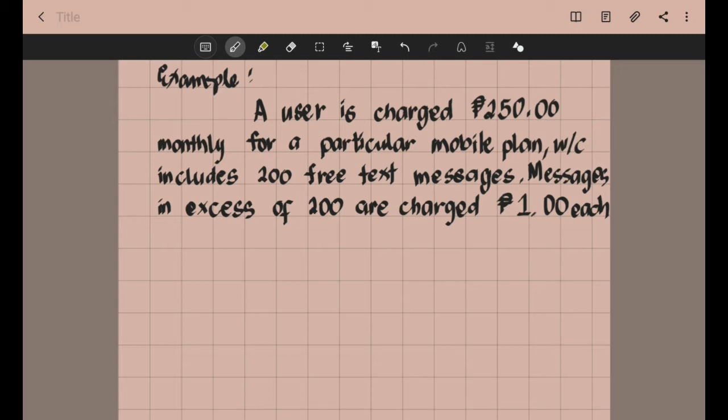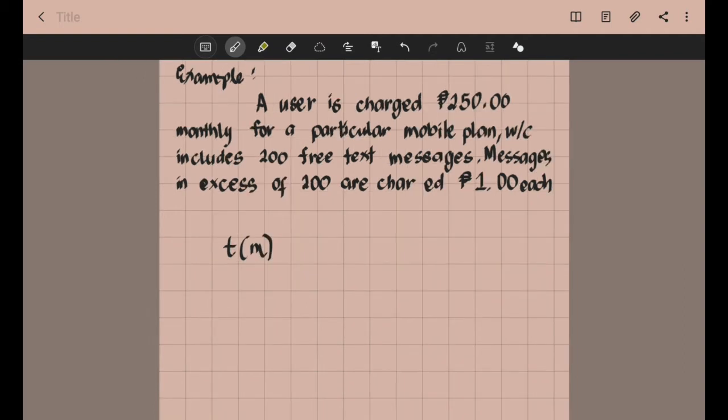In this case, our function is T of M. We will have two formulas. The first formula is if the user sends text messages not exceeding 200. The second formula will be if the user sends text messages more than 200.